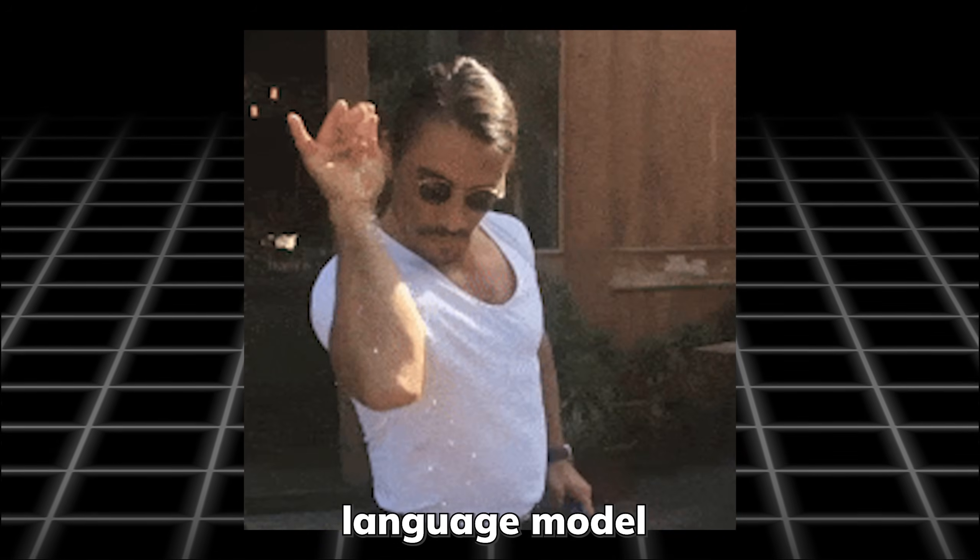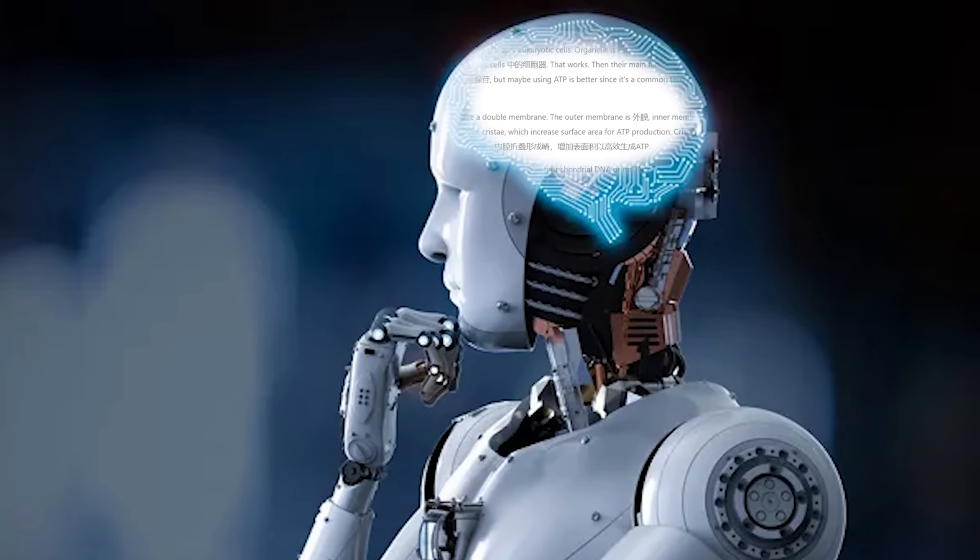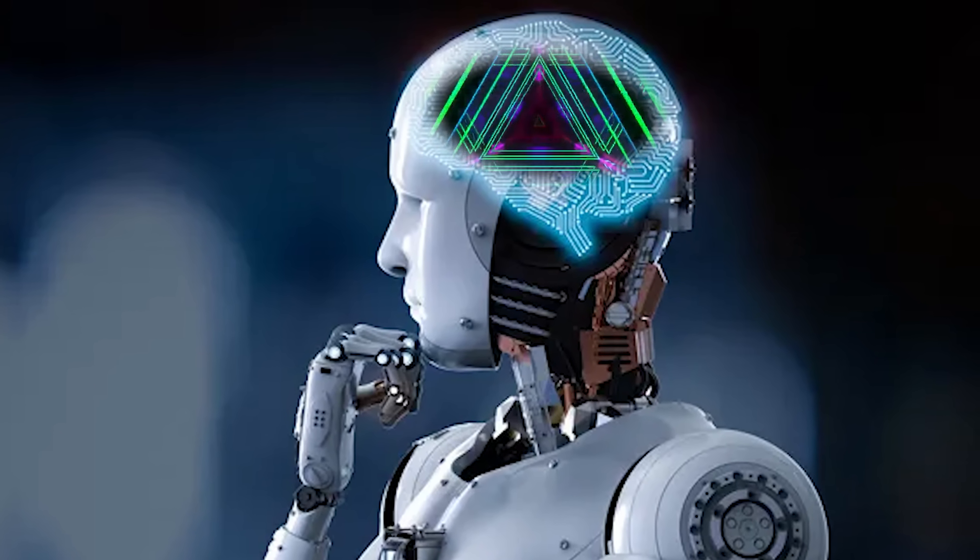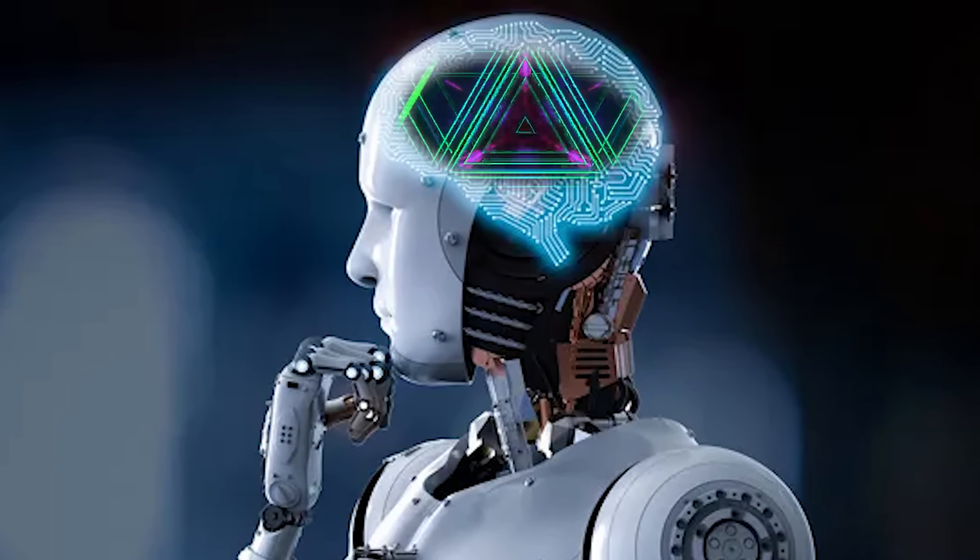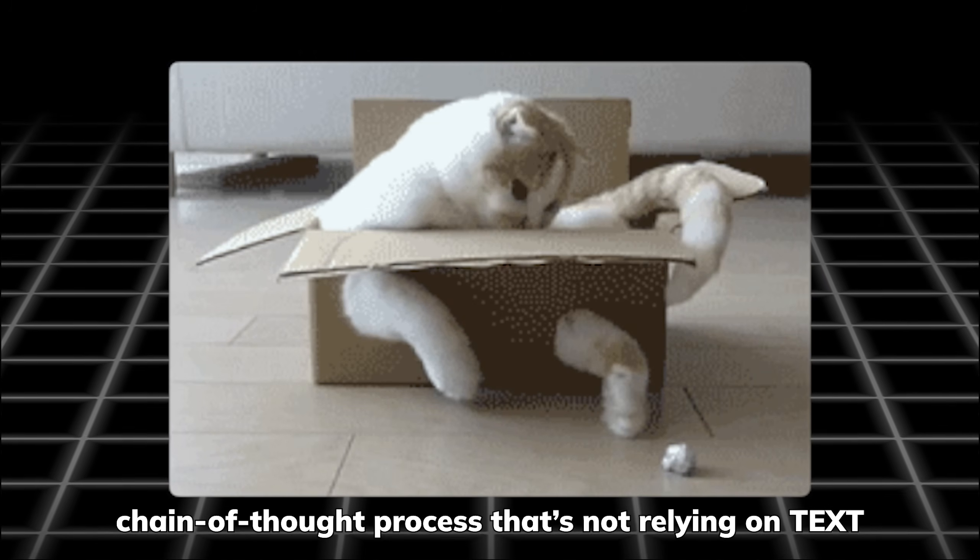So before we sprinkle all these fancy ways of thinking on top of a language model, maybe we need to prepare a model that is not completely language based and is capable of thinking abstractly end to end, which should help to realize the potential of thinking out of the box in the new chain of thought processes proposed in Coconut or Hugin.